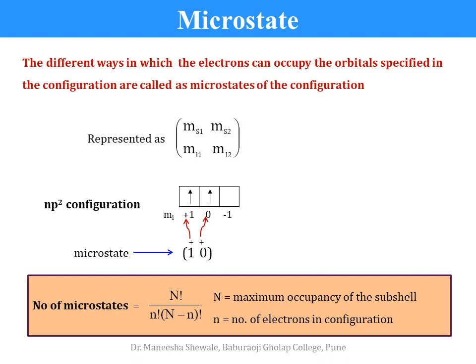Now how to represent the microstate? In the bracket, on the lower side we write down the values of the magnetic quantum number ML. And above it we write down the sign for the spin quantum number — that is plus for the MS value plus half and minus for the MS value minus half. For the NP2 configuration here, the microstate will be written as 1, 0 plus plus.